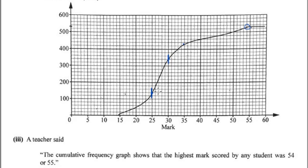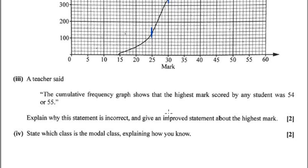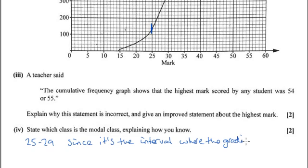So the modal value or the modal class must be 25 to 29 because it's where the graph is steepest. So I'll just write all that down. So 25 to 29, since it's the interval where the gradient is steepest.